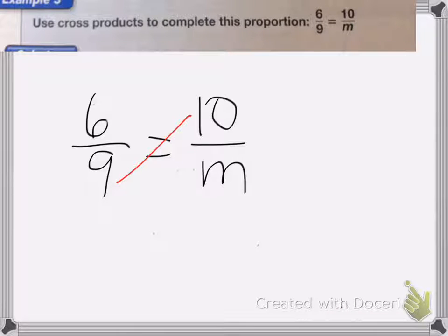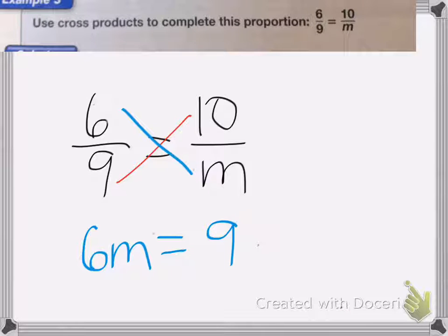So again, I do the top times the bottom. So I end up with 6m, and we keep the equal sign. 6m equals 9 times 10.